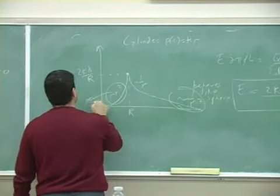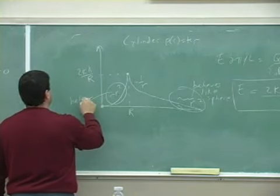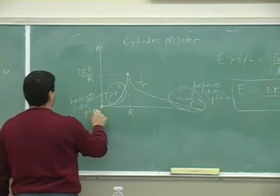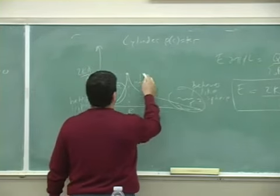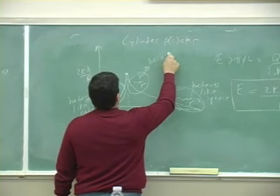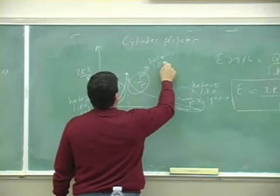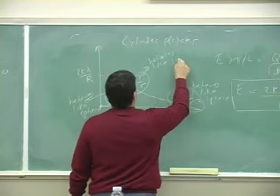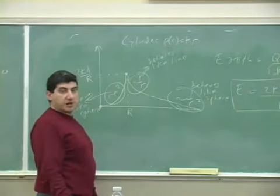So here behaves like sphere, behaves like sphere, and over here behaves—the cylinder will behave like a line, like a line or rod.